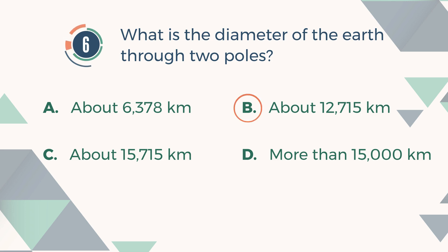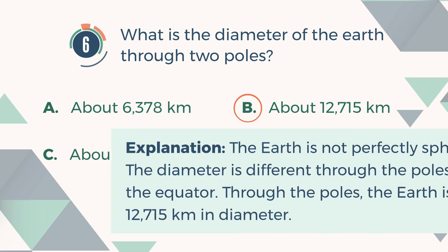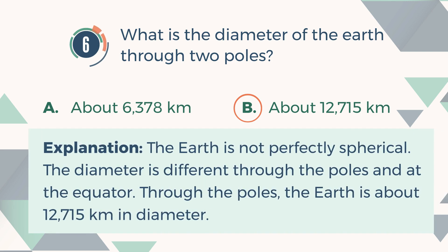The correct answer is B. About 12,715 kilometers. Explanation: The Earth is not perfectly spherical. The diameter is different through the poles and at the equator. Through the poles, the Earth is about 12,715 kilometers in diameter.